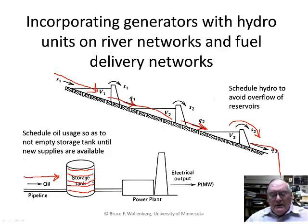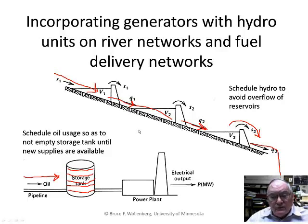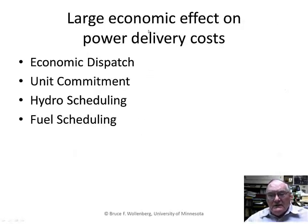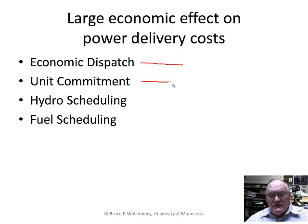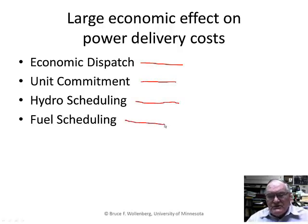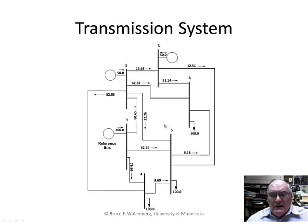It gets very complicated for hydro systems when you're scheduling the operation of rivers. So once again there's a large economic effect from the generators: economic dispatch, scheduling the generators, unit commitment, hydro scheduling, and fuel scheduling. Now that takes care of the generation side, but we also have transmission systems.